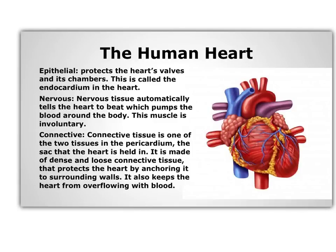The cardiac muscle is involuntary, which means the nervous system — the brain — automatically sends messages to your heart when to beat. Connective tissue is also very important in the heart. It makes up the pericardium, which is the sac that the heart sits in within your chest cavity. It protects the heart, anchors it to the surrounding tissue so it doesn't move around in your chest cavity, and also keeps the heart from overflowing with blood. Those are the four tissue types and an example of an organ that demonstrates all four of them. Now on to organ systems.